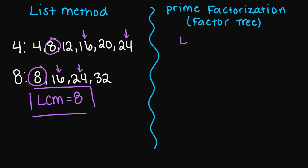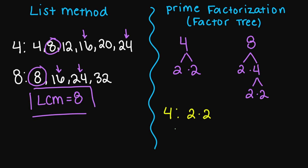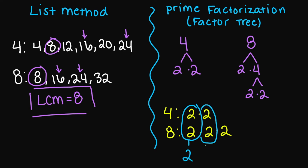So if you did the prime factorization: my four, we have two times two. My eight, we have two times four, and then my four factors into two times two. So four is two times two, and eight is two times two times two. I find a pair of twos — write it one time. I find another pair of twos — write it one time. And then we have this one add-on two. So two times two is four, four times two is eight. So your answer is also eight.